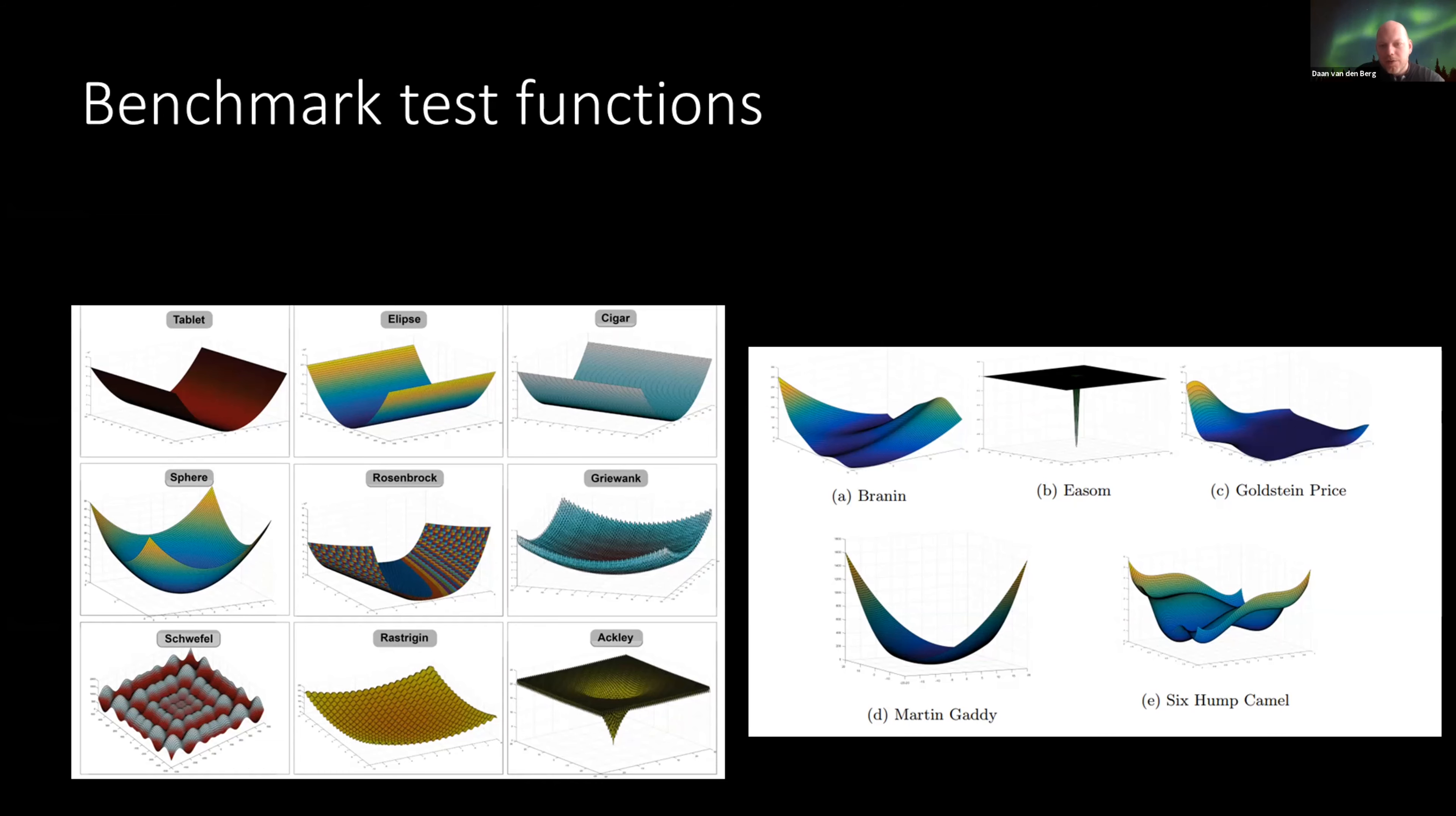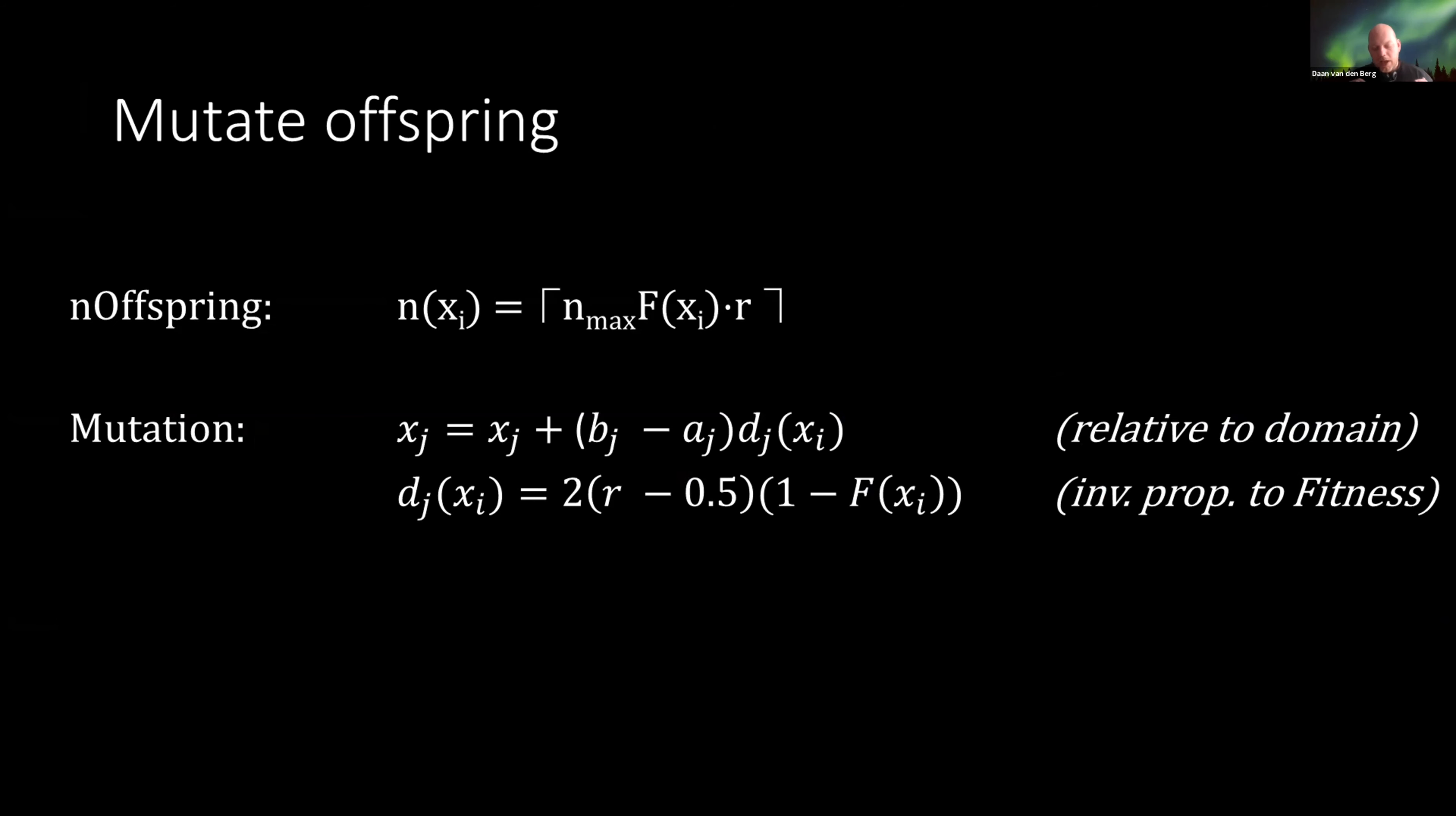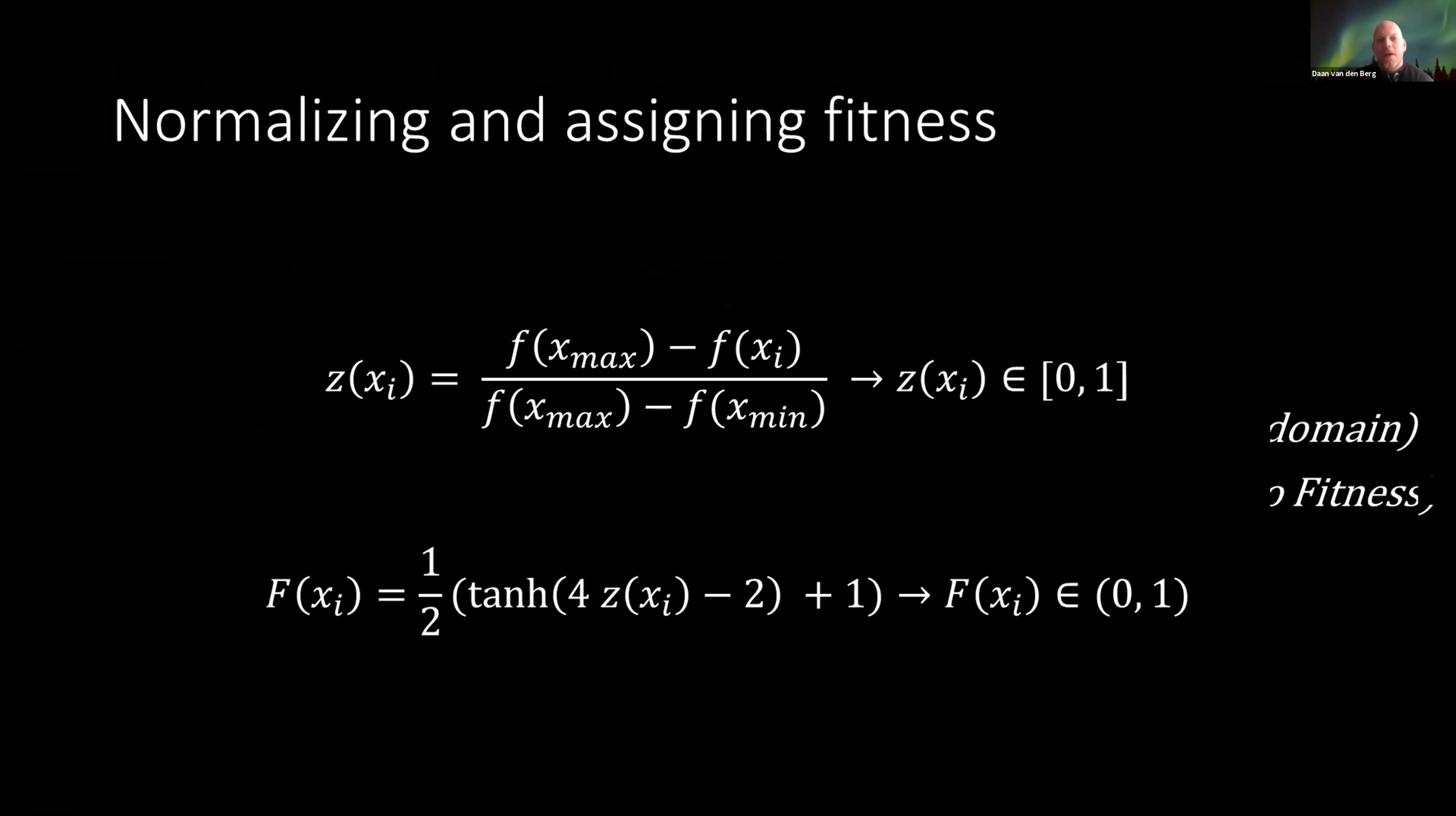A previous study has shown that the algorithm performs differently on different classes of functions and we don't know why and we don't know how that works, but this is why we got this set of benchmark functions. The fittest individuals produce many offspring proportional to the fitness value, and the mutation is inversely proportional to the fitness value. The objective functions get normalized from one to zero throughout the population, and then the fitness assignment is a little bit different because from the objective function we make the fitness by using this tangent hyperbolic function, and that smoothens out the objective functions a bit to the fitness values.